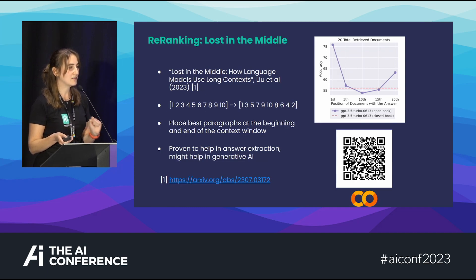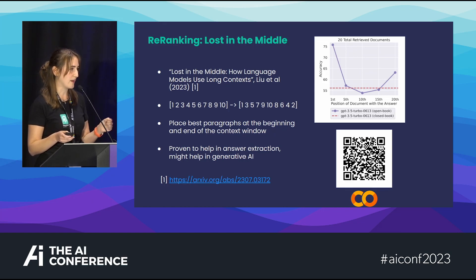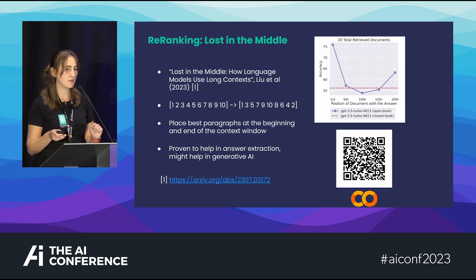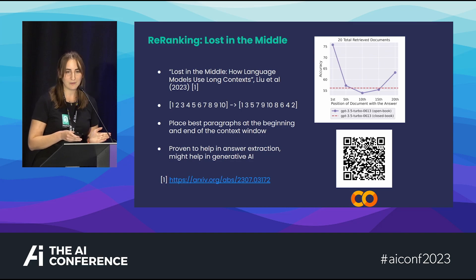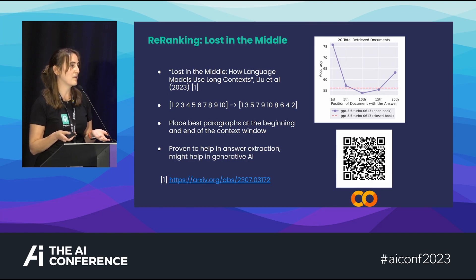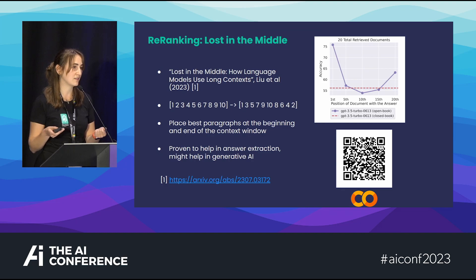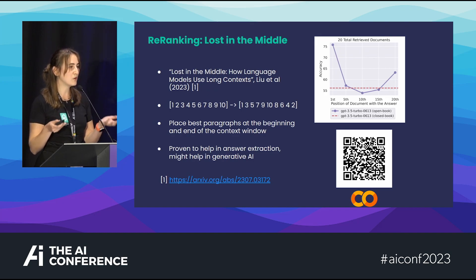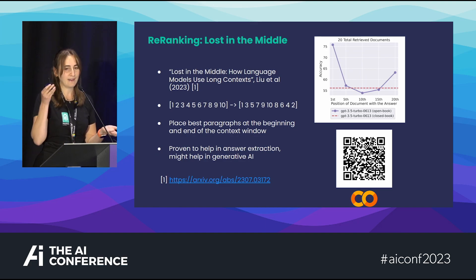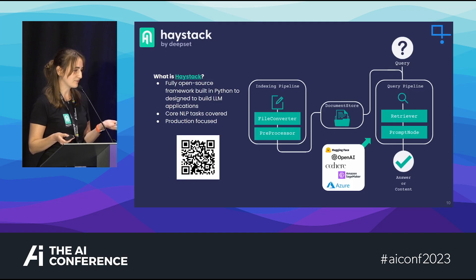Another re-ranking method — very new — is called Lost in the Middle, based on a recent research paper. That QR code takes you to a Colab that has both the diversity ranker and this one. The paper found that answers generated by large language models were frequently based on contexts appearing at the beginning and end of the context window. This presents a problem where context in the middle can be far more relevant than context at the end, for example when using only similarity search. So Lost in the Middle is essentially a reshuffle that ensures the most relevant context is placed at the beginning and end of the context window.